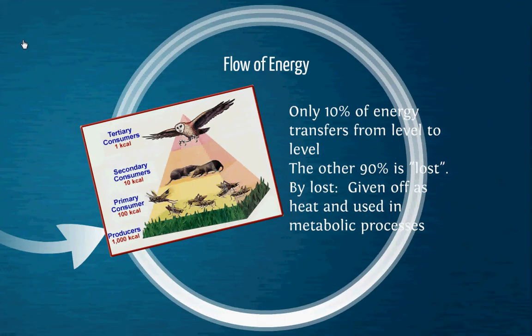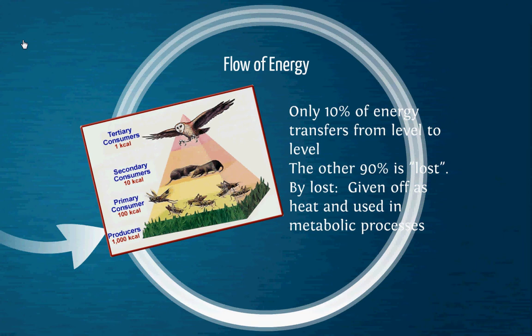Now, here's how the flow of energy works — and this is the math part. But before you freak out, realize this is not hard math; this is just percentage math. Only 10% of energy transfers from level to level; 90% is lost. Now, the law of conservation of matter and energy says that you can't create or destroy energy — it just changes form. So when I say 'lost,' I don't mean it goes on vacation; I mean it's given off as heat. The process of eating and getting that food to the point that you can use it for energy uses about 90% of it, so the organism can only harness 10% as it goes up from level to level.